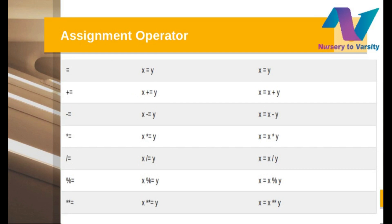The third operator is the assignment operator. In assignment operator, whenever we want to pass any value — for example, you assign variable x = 2 — that equals sign is assigning the value 2 to the variable x. Plus equal-to is similarly like x = x + y. This is a shorthand property: x += y. Whenever you want to perform x = x + y, you can write either the full form or the shorthand x += y. Both mean the same. Similarly we have x -= y, x *= y, x /= y, x %= y, and x **= y.